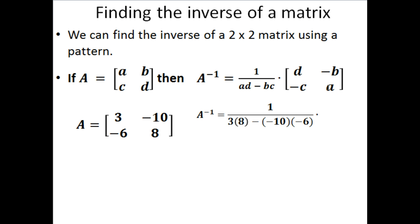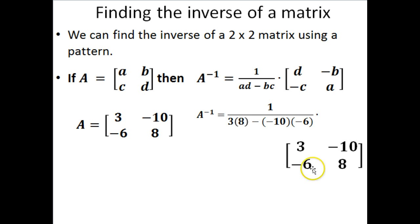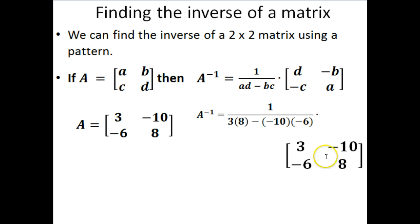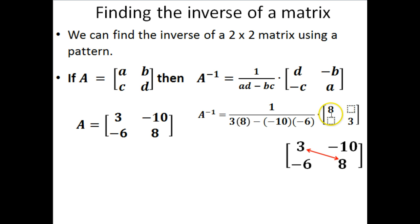This new matrix is going to be derived from our original matrix. So let's write our original matrix down here just for a reference point — this is not the matrix we'll plug in, just a reference so we can see where it came from. You'll notice this D and this A: these two basically are flip-flopped, they switched positions. So these two numbers are going to switch positions. This was a 3, now it becomes an 8. This was an 8, now it becomes a 3. We're going to write that in with our new matrix. All these two did is just switch spots.